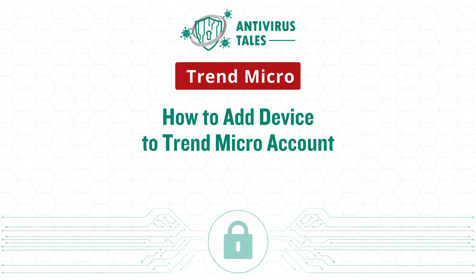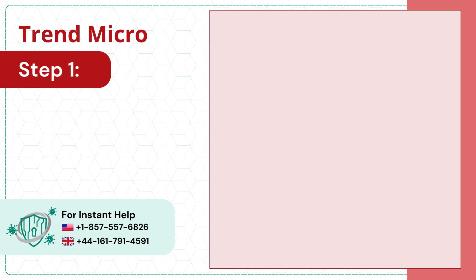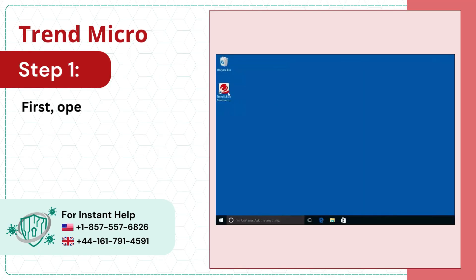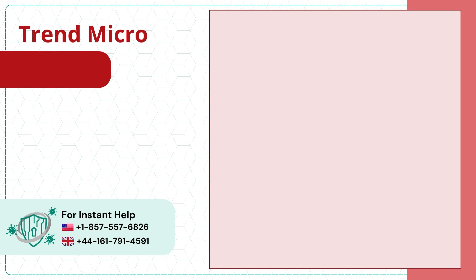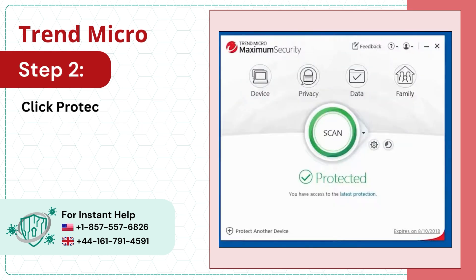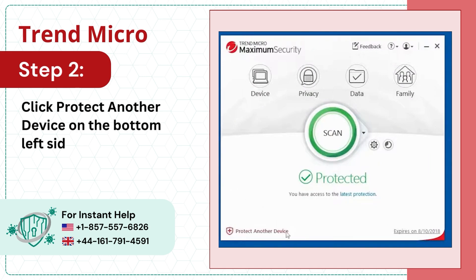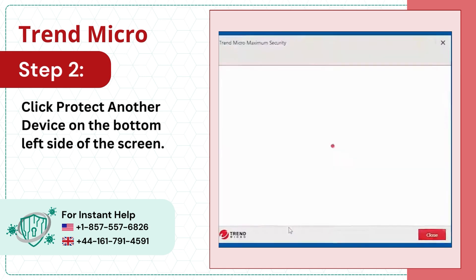How to Add a Device to a Trend Micro Account. Step 1: First, open your Trend Micro Security Console. Step 2: Click 'Protect Another Device' on the bottom left side of the screen.